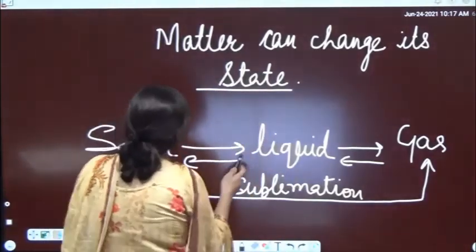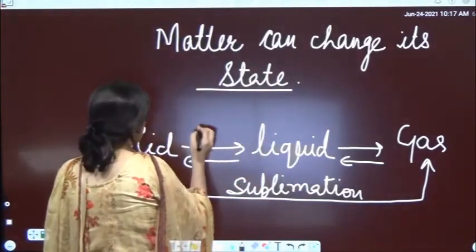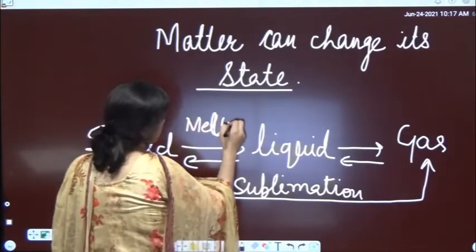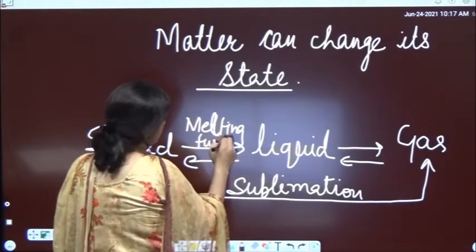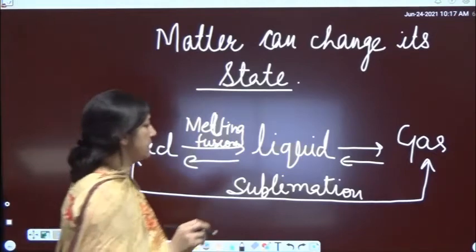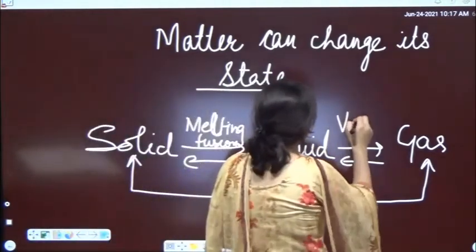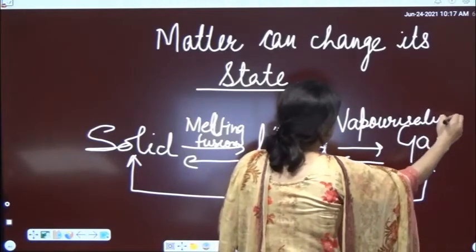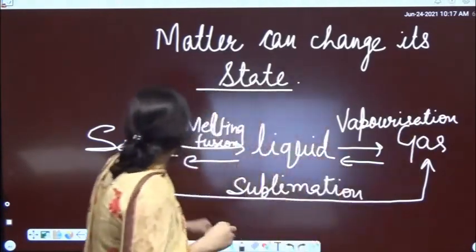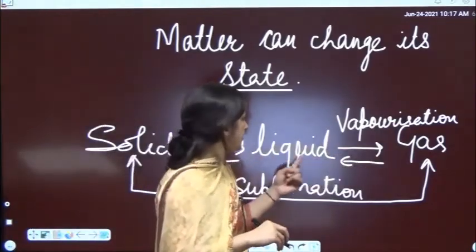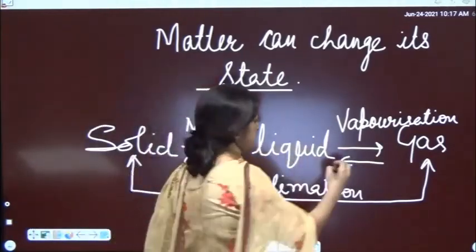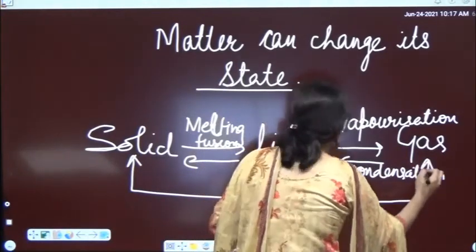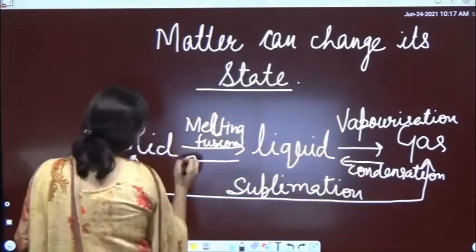Solid changing to liquid is called melting or fusion. Liquid to gaseous is vaporization. The process in which gas is converted into liquid is condensation.